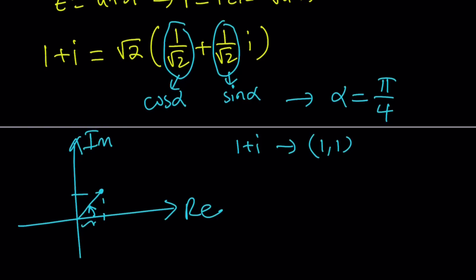So this is 1 unit, this is 1 unit. Therefore, the radius or the modulus is going to be square root of 2 from Pythagorean theorem. That's just another way to look at it visually.